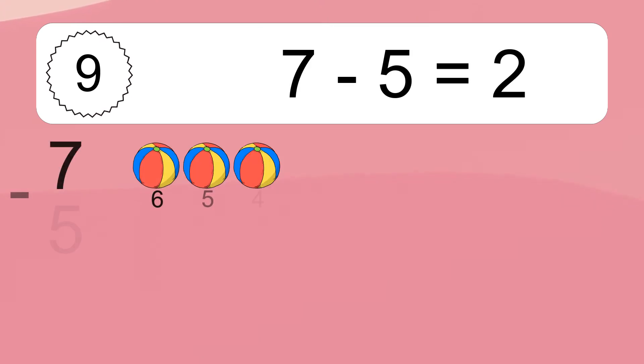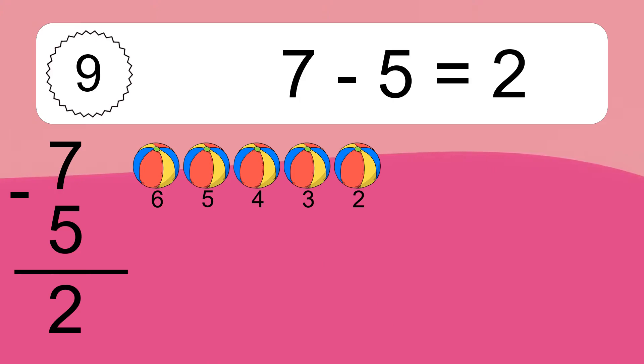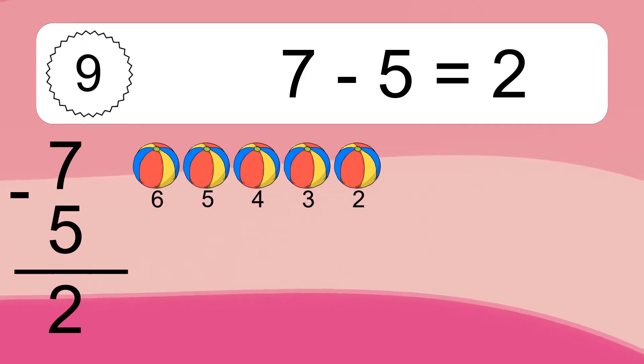7 minus 5 equals 2. Let's count it: 6, 5, 4, 3, 2. 7 minus 5 equals 2. Let's count it: 6, 5, 4, 3, 2.